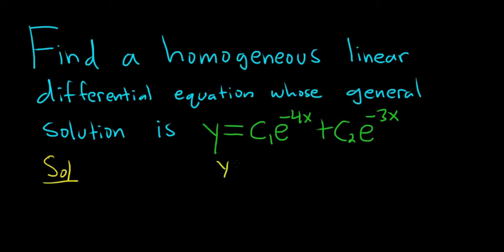So recall that this has the form c1 e to the m1x plus c2 e to the m2x because we have distinct real roots. So one of the m's is negative 4 and the other one is negative 3. Okay, so m is equal to negative 4 and m is equal to negative 3.